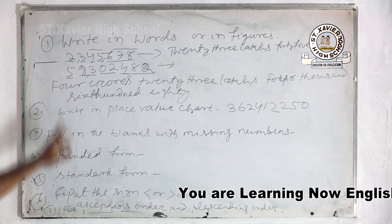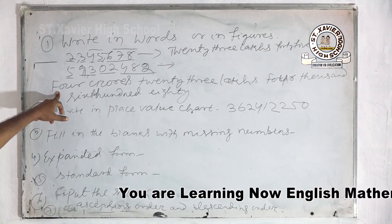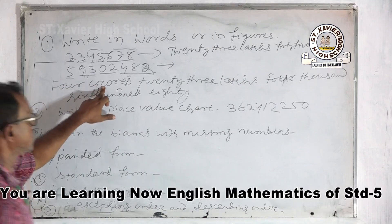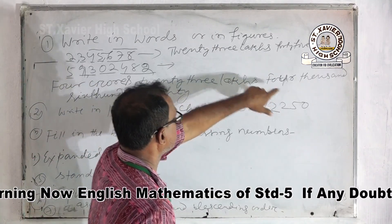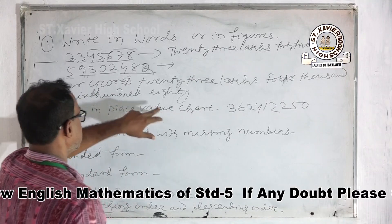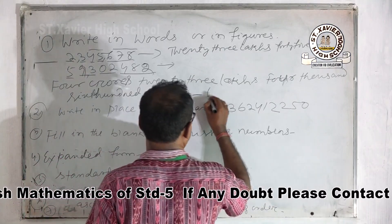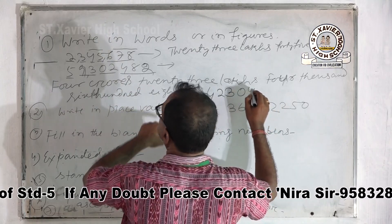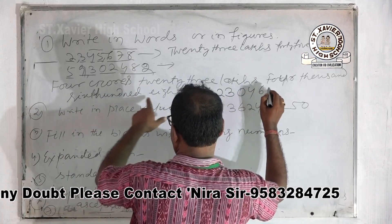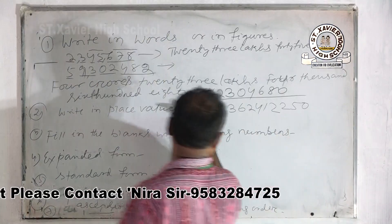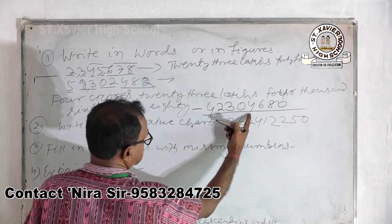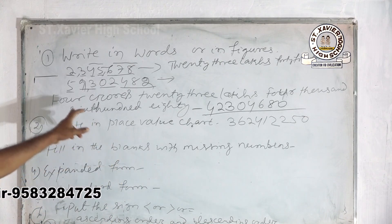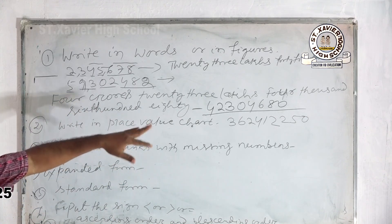Here you have been given words and you have to write in numbers. For example: four crores, twenty-three lakhs, four thousand, six hundred eighty. Once you understand the place values, writing the number becomes straightforward.